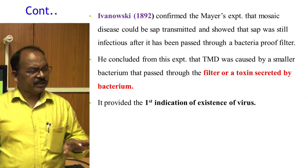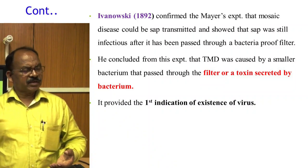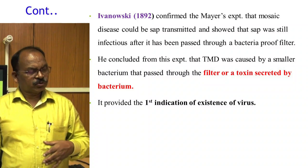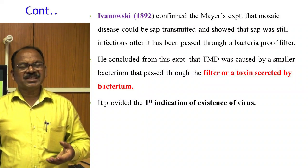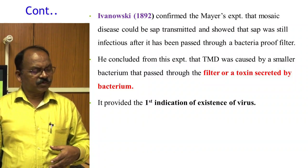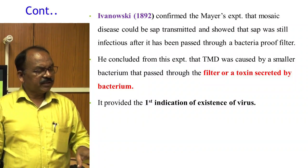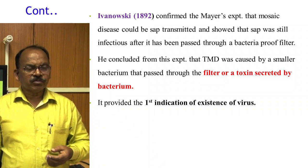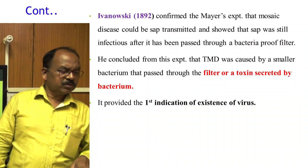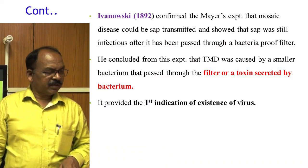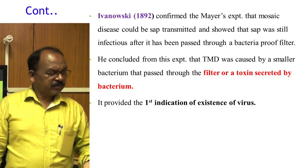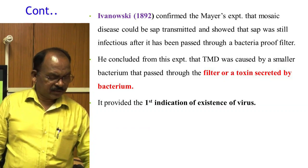Ivanovsky in 1892 confirmed Mayer's experiment that the mosaic disease could be transmitted, and showed that the sap was still infectious after it had been passed through a bacteria-proof Chamberland filter. He concluded that tobacco mosaic disease was caused by either a smaller bacterium that passed through the filter or a toxin secreted by a bacterium. This experiment provided the first indication of the existence of the virus.